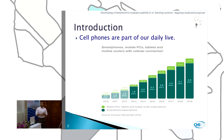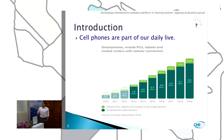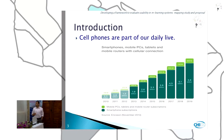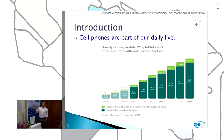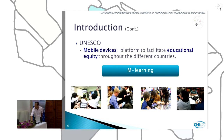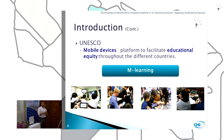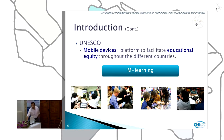Nowadays, cell phones are part of our daily lives. In this graphic, we can see that smartphone subscriptions have been growing in recent years. One prediction is that in the year 2019, we will be reaching 5.6 billion, and 800 million for mobile PCs, tablets, and mobile routers. UNESCO considers that mobile devices are a platform to facilitate educational equity throughout different countries. This idea is what we now know as M-Learning.